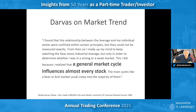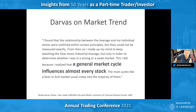Even the great Nicholas Davis basically said: 'I found that the relationship between the average and my individual stocks were confined within certain principles, but they could not be measured exactly. From then on I made up my mind to keep watching the Dow Jones Industrial Average — which is what he had available back in the 50s — only in order to determine whether I was in a strong or weak market.'